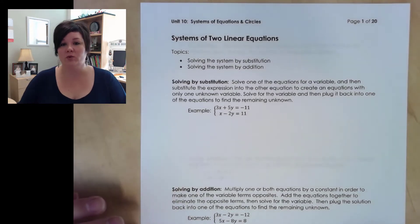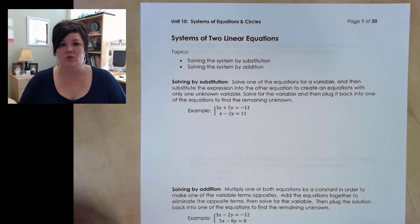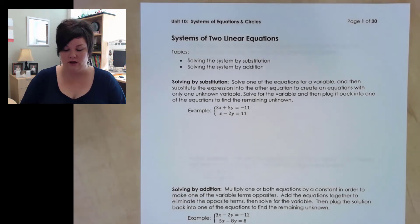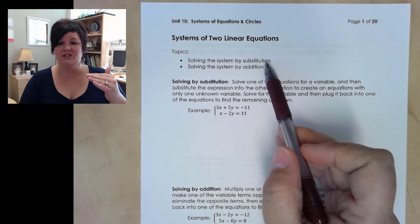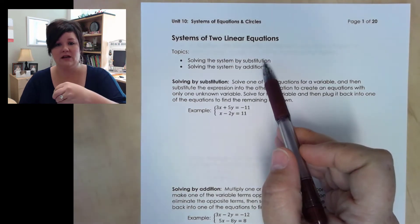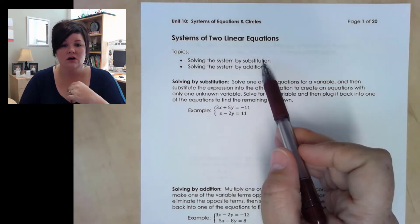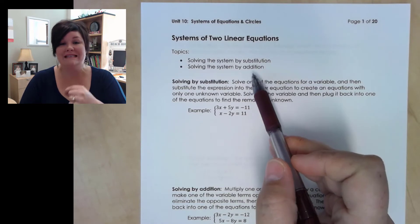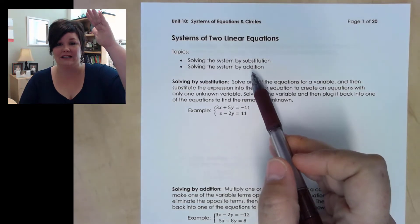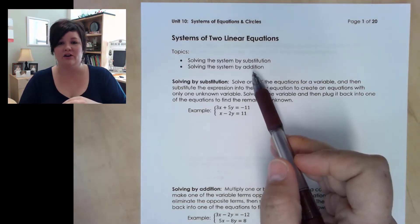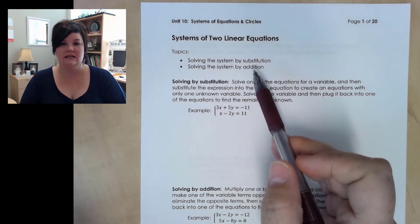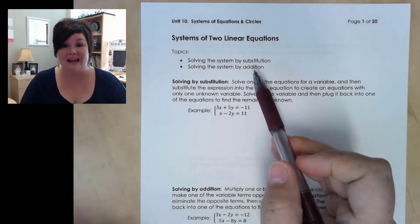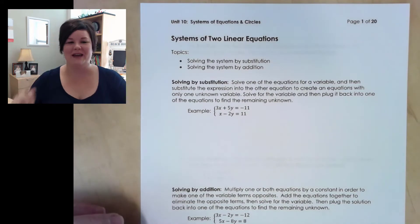We're going to look at two different ways of solving them. First, solving by substitution, where we solve one of the equations for a variable and plug it into the other equation. We're also going to look at solving by addition, where we try to eliminate an entire variable term from both equations. I'll show you both methods and then we'll look at the different types of answers we can get.